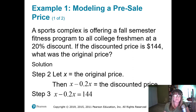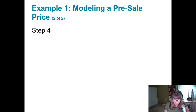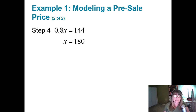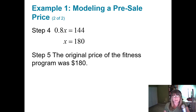Step three: now we've got to set up the model because we know what the discounted price is. Our equation is x minus 0.2x equals $144. Step four, let's solve it: combining x and minus 0.2x gives 0.8x equals $144. Dividing each side by 0.8, we get $180. The original price of the fitness program is $180.